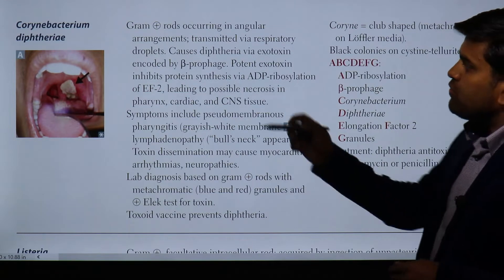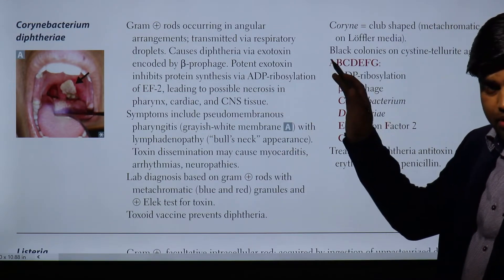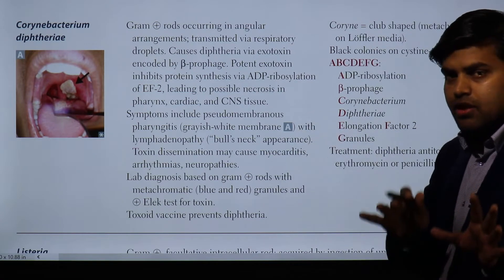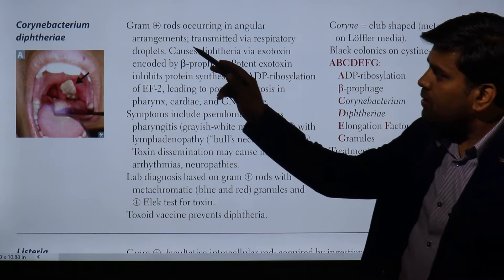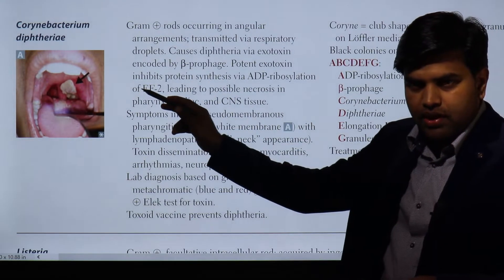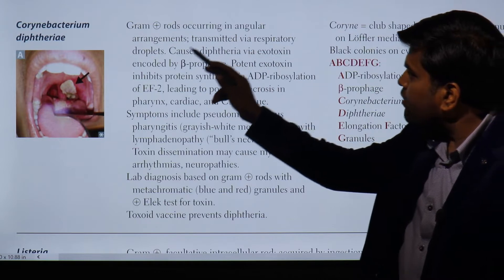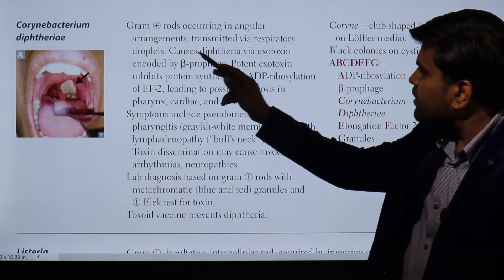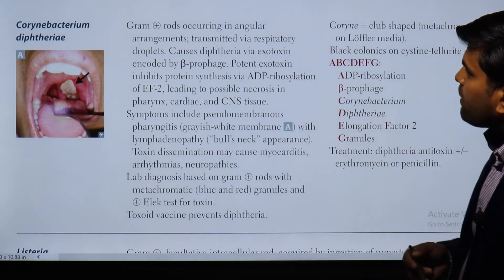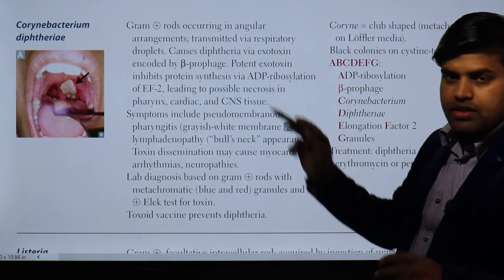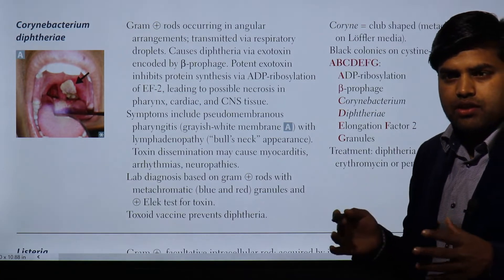Corynebacterium diphtheriae is a gram positive bacilli that grows under aerobic conditions. It is a gram positive rod occurring in an angular arrangement and is transmitted via respiratory droplets. The angular arrangement is a key characteristic feature of this organism.